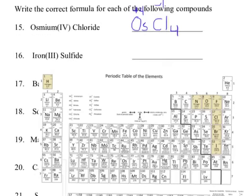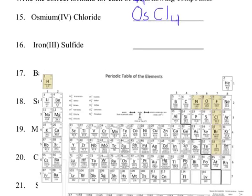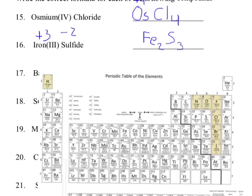I have iron 3 sulfide. Iron is plus 3 and sulfur is minus 2. I put Fe and give it sulfur's number, 2. Then I write S and give it iron's number, 3. So it's Fe2S3. This works because 2 positive 3s is positive 6, and 3 negative 2s is negative 6 — they cancel.